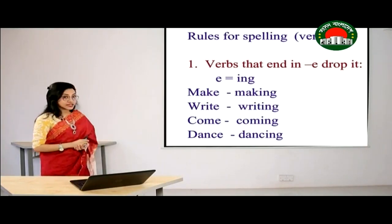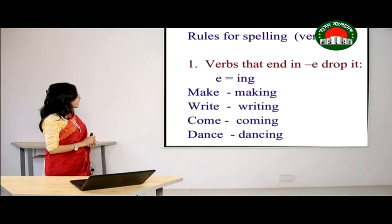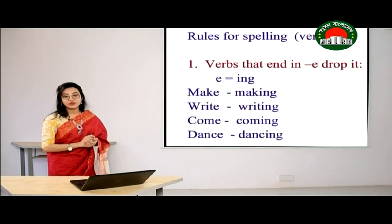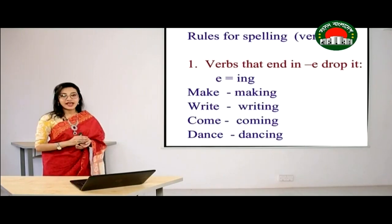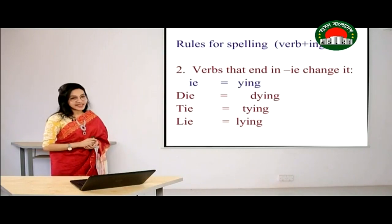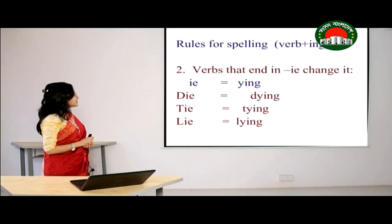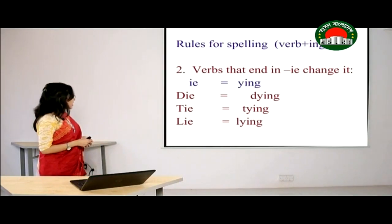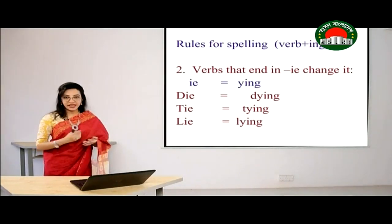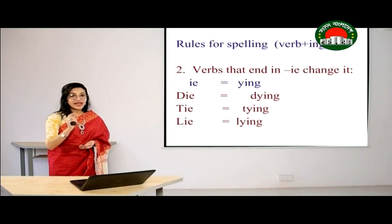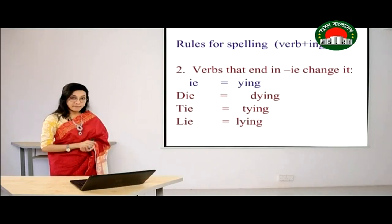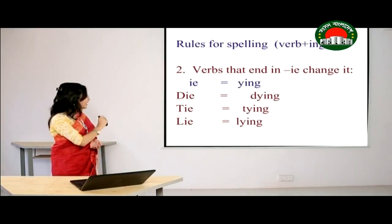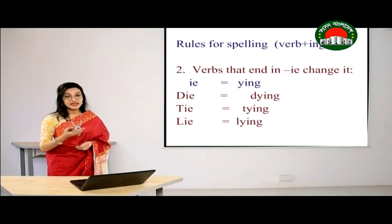The second rule: verbs that end in 'ie' — change 'ie' to 'y' and add -ing. For example: 'die,' 'lie,' 'tie' all end in 'ie.' When adding -ing, we omit the 'ie' and replace it with 'y-ing,' giving us 'dying,' 'lying,' 'tying.'